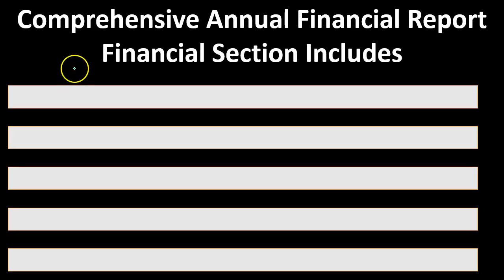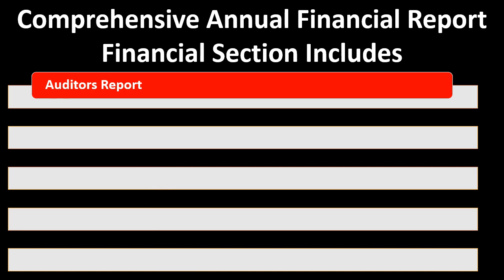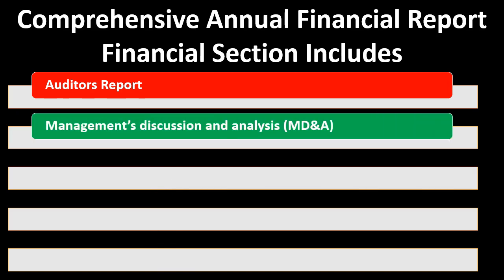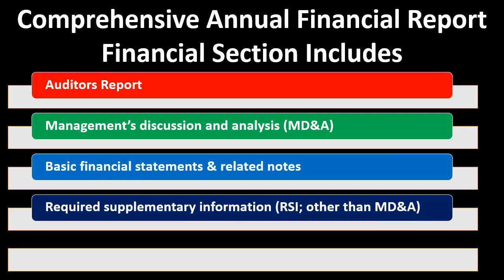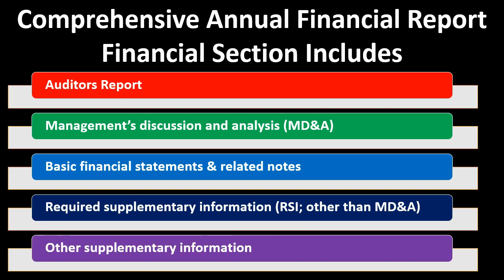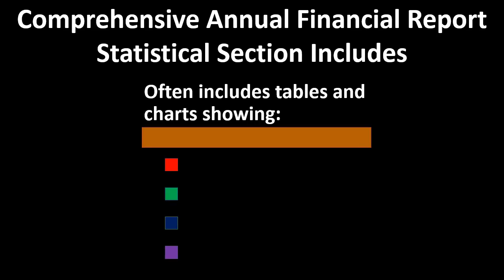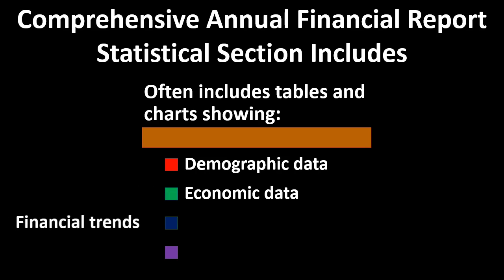The financial section of the CAFR includes the auditor's report, management's discussion and analysis (MD&A), basic financial statements and related notes, required supplementary information, required supplementary information other than the MD&A, and other supplementary information. The statistical section typically includes tables and charts showing demographic data, economic data, financial trends, and operating information.